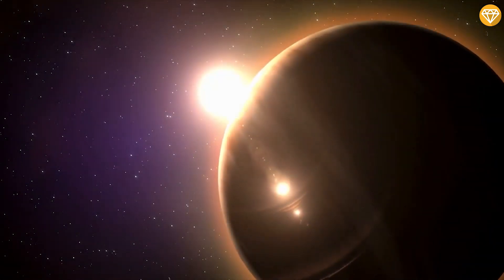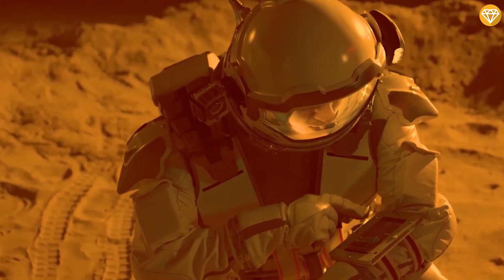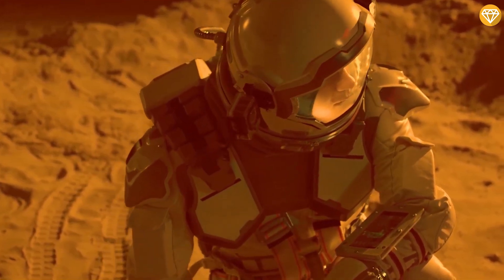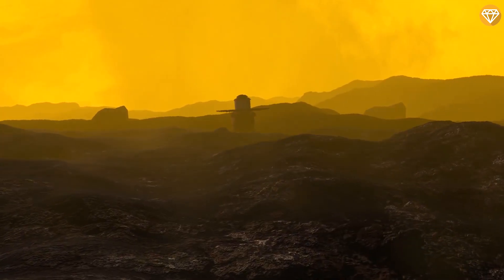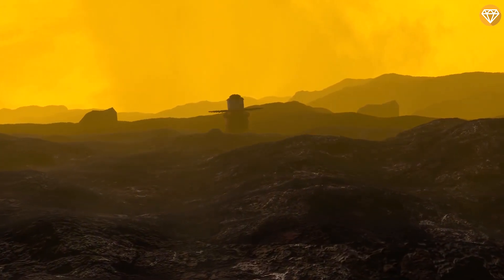The research team discovered that one day on Venus is the equivalent of 243 Earth days and some change. The discrepancy they previously encountered was due to the thick, fast-moving clouds in Venus's atmosphere which altered the planet's spin.